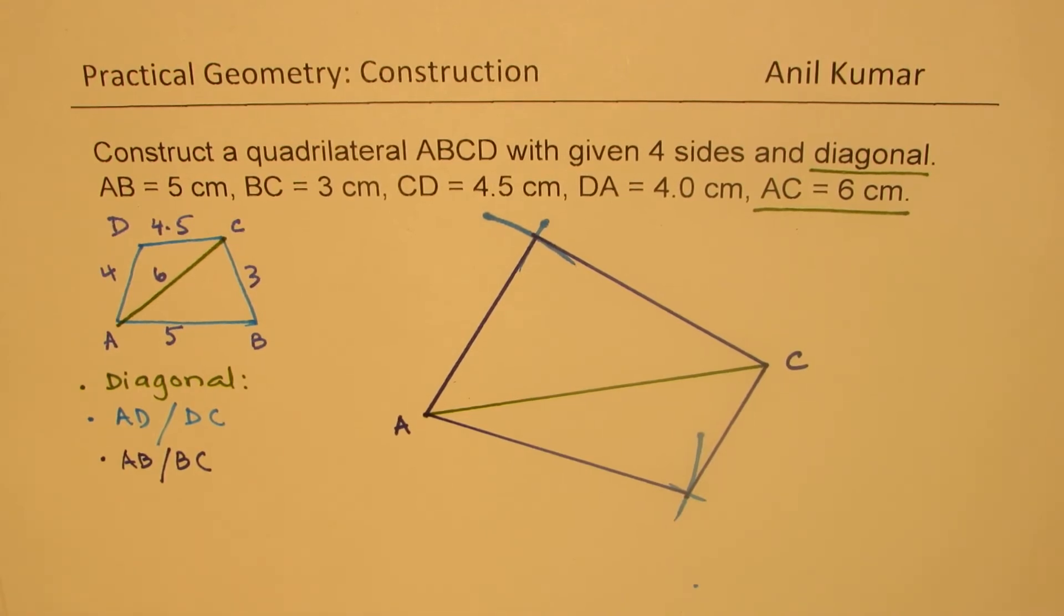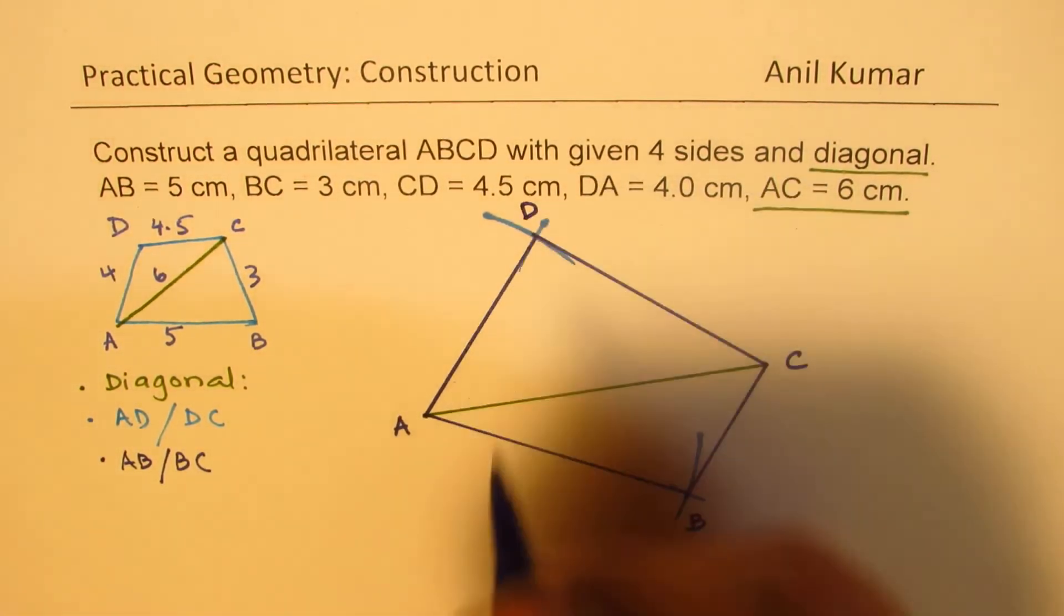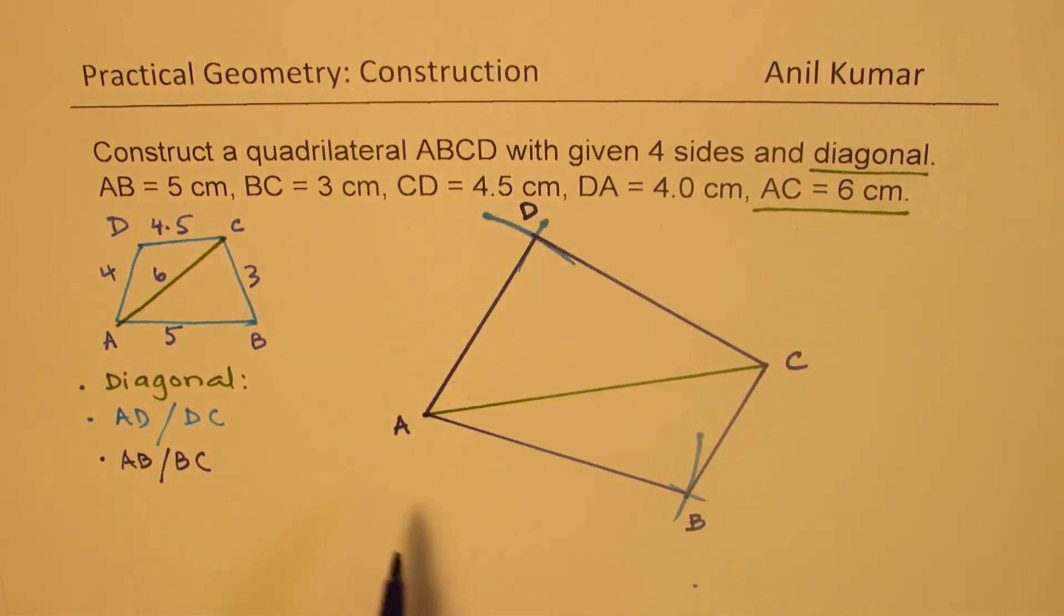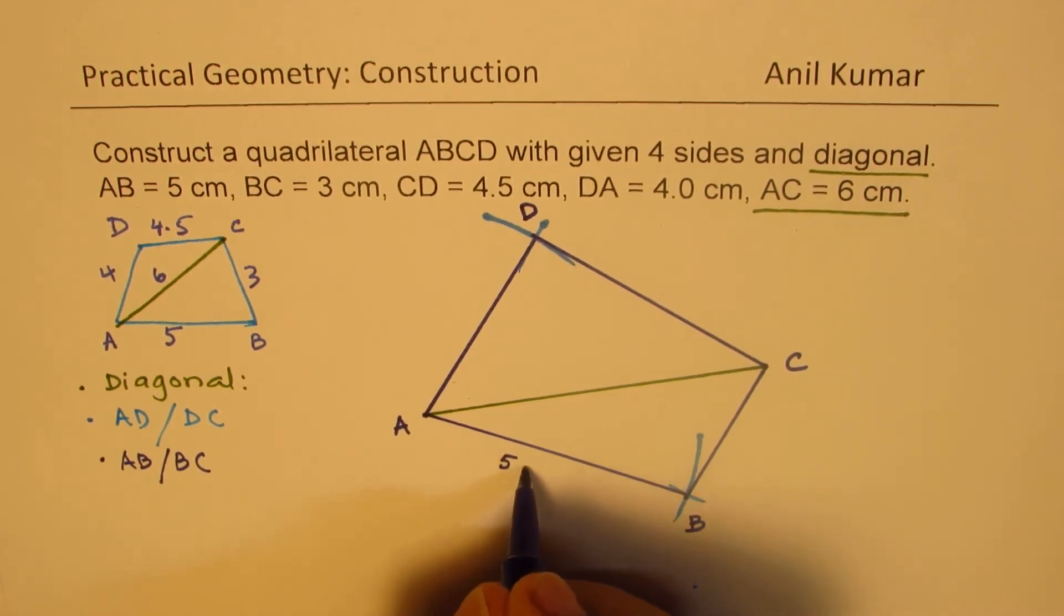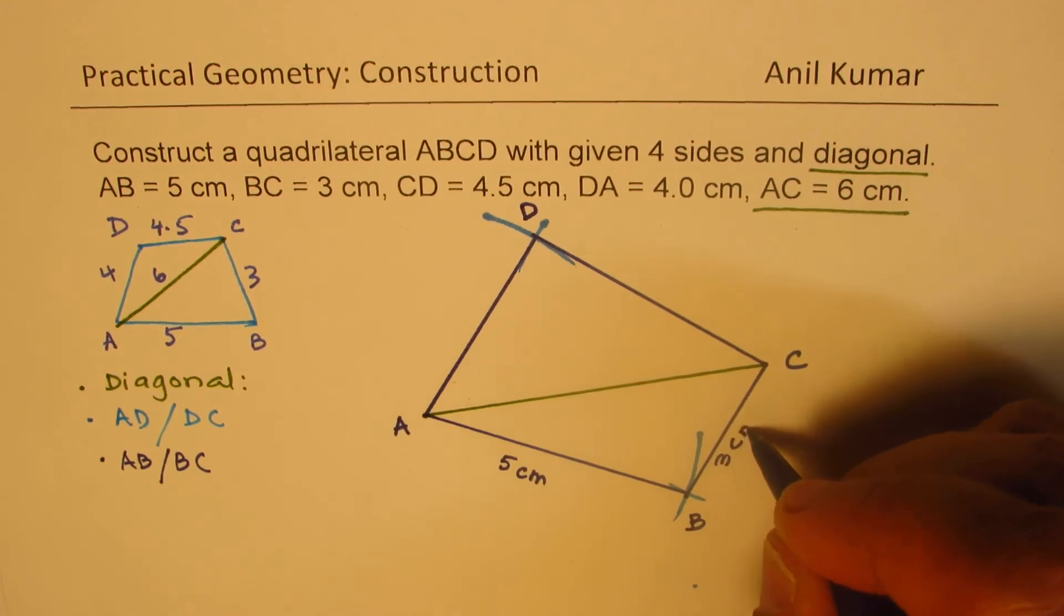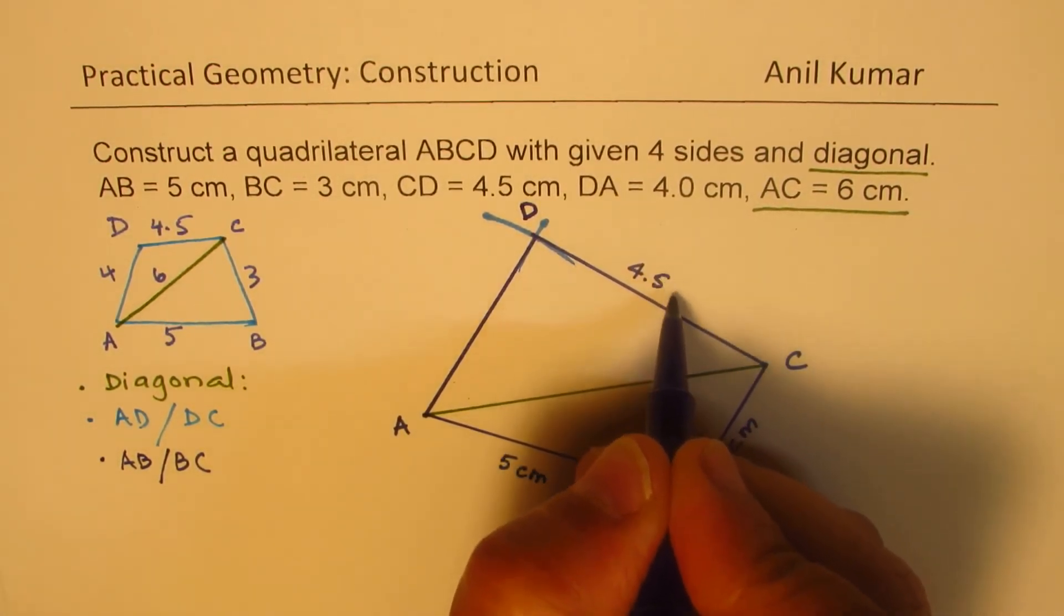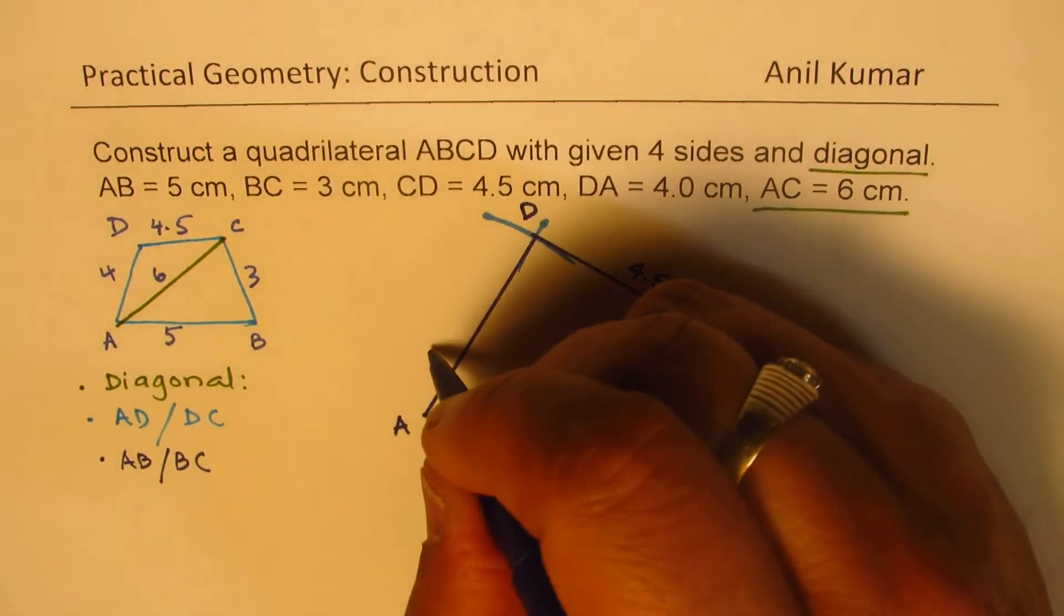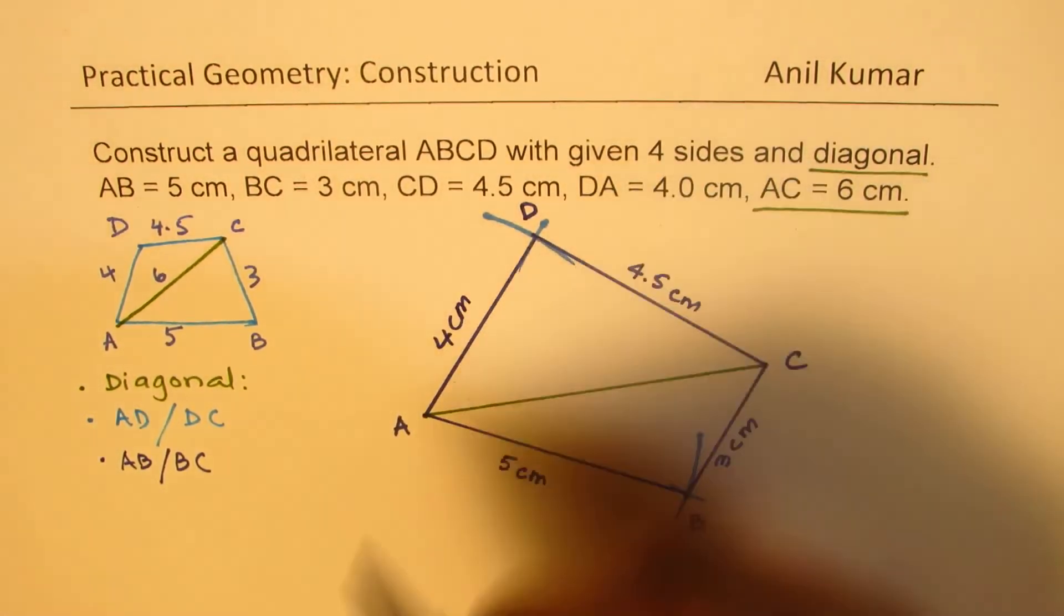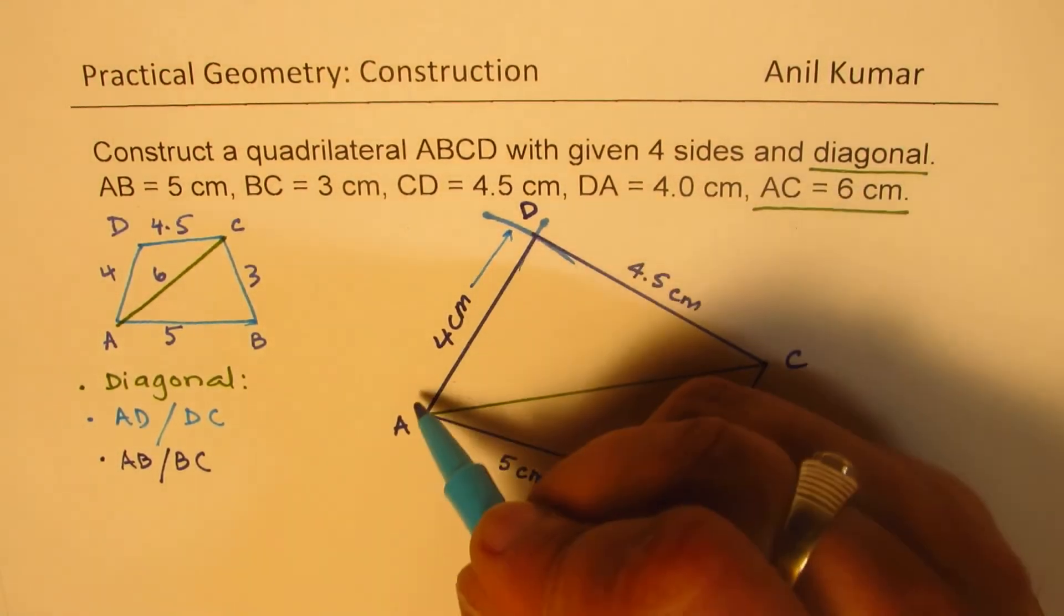Now you need to label it. We have this as B, C, and D. The size given to us: A to B is 5 centimeters, B to C is 3 centimeters, and then we have 4.5 centimeters and 4 centimeters. That is how you have to label your sides.